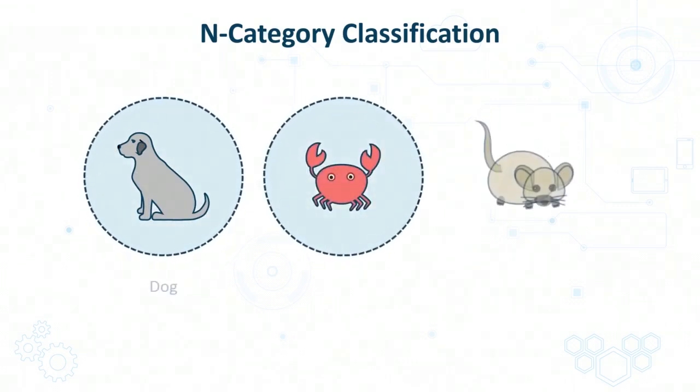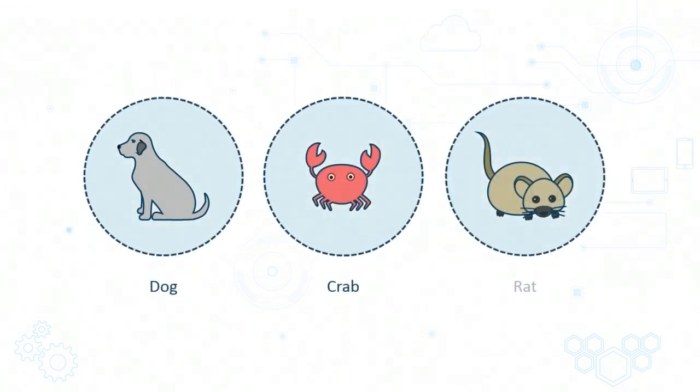On the other hand, if the output can fall into multiple categories, take for instance where you're trying to predict the type of animal based on certain input data. So if your categories include dog, crab, and rat, then you have three categories to choose from. And if you have even more animals, then you potentially have N different categories. In such a case, the problem you are trying to solve is one of N category classification.